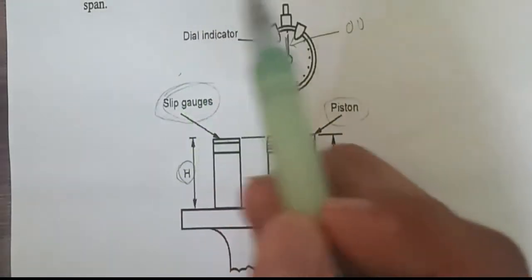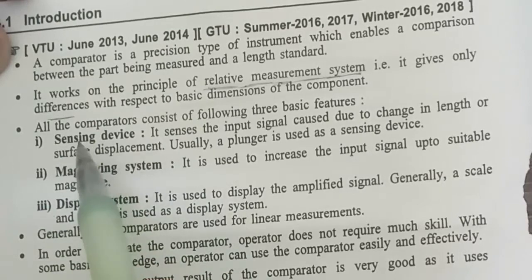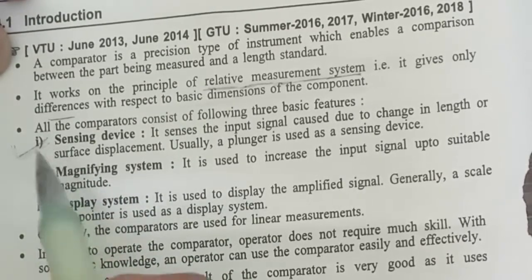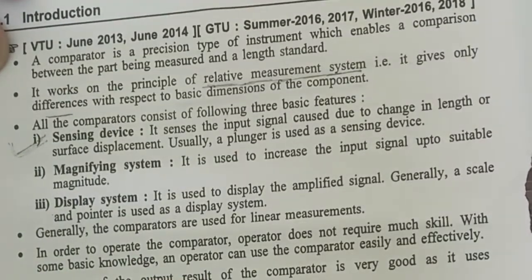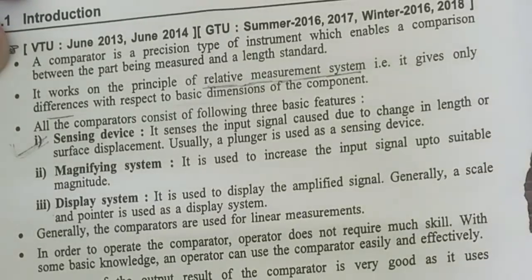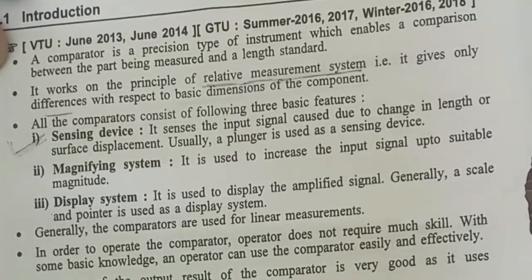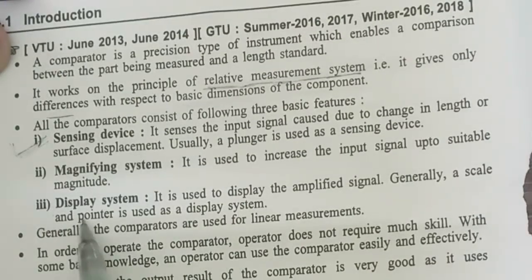This is the need of the comparator. The comparator consists of three basic features. First is the sensing device — here you can see the plunger; this is the sensing device. Second is the magnifying system — even a small change you can see here. Third is the display system.